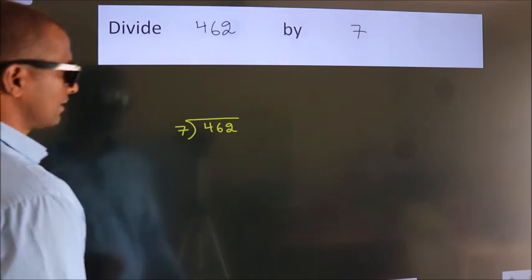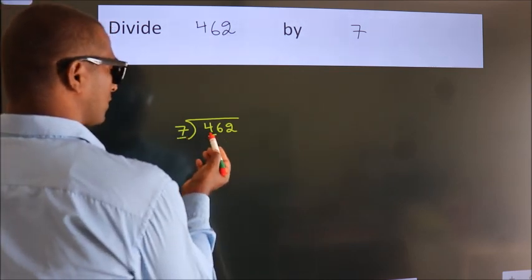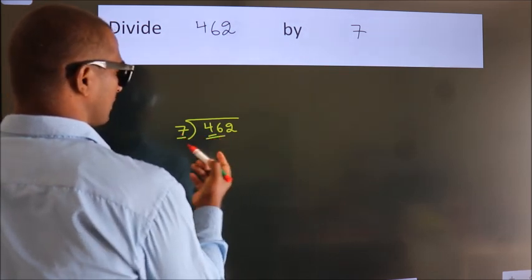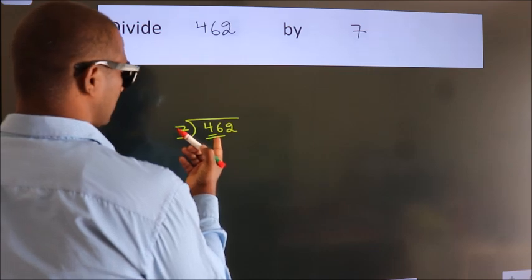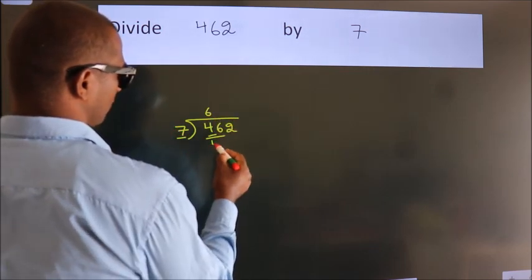Next. Here we have 4, here 7. 4 smaller than 7. So we should take 2 numbers, 46. A number close to 46 in 7 table is 7, 6, 42.